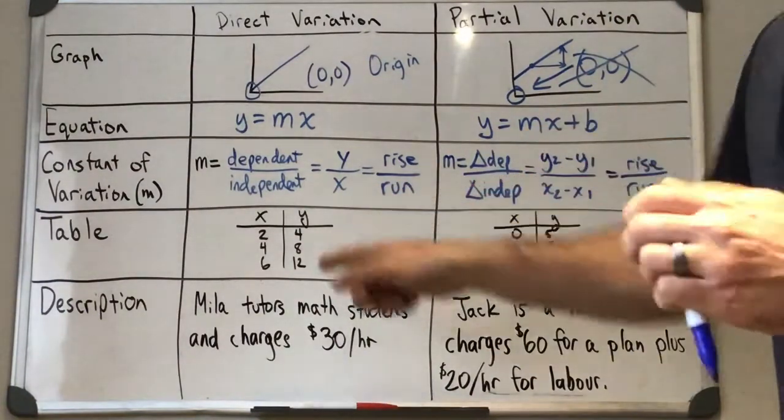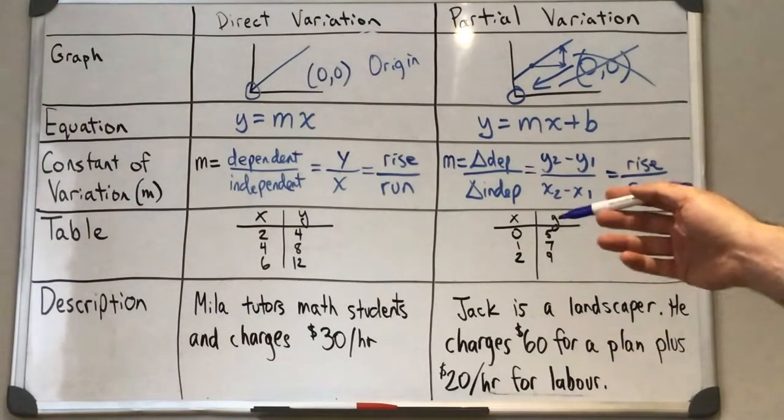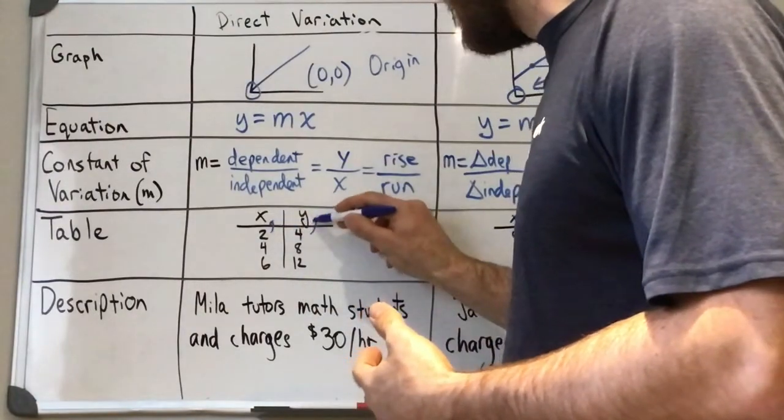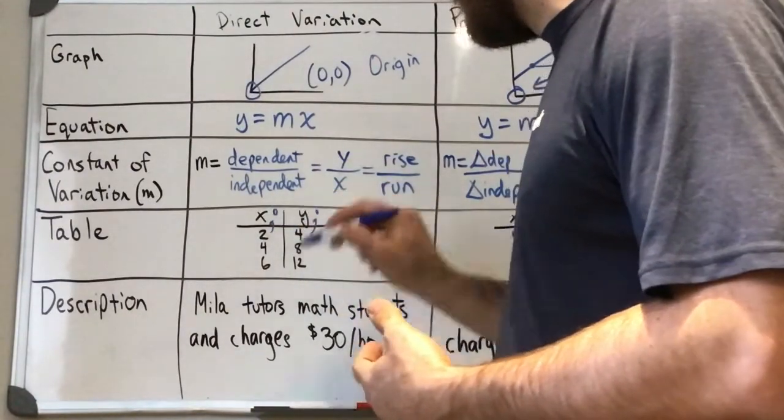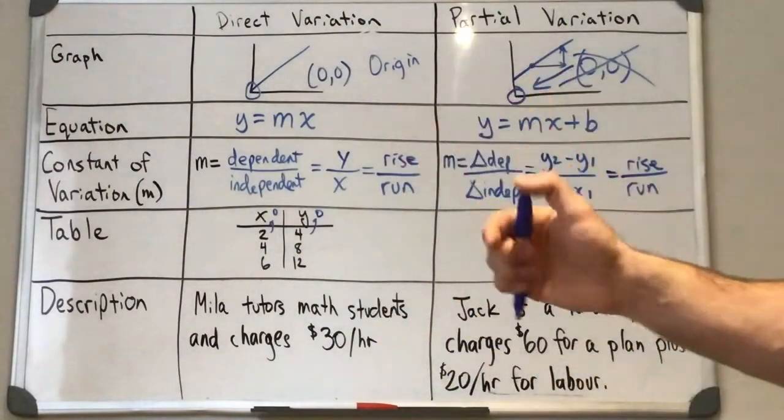From a table, this one, it's not obvious that we have direct variation from this, but if we kind of trace our values, if we went up from here, it's not really showing in the graph, but we would have that (0,0) point, our origin. Okay, so if this is a linear relationship,